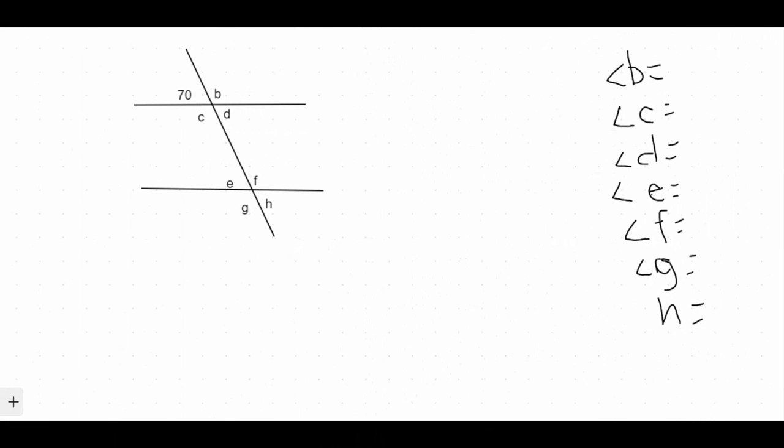Hey guys, so this video is going to focus on how to find a missing angle when you're dealing with a transversal with parallel lines and we're going to take into consideration alternate interior angles, corresponding angles and things of that nature. So we're given the following lines here that we have.